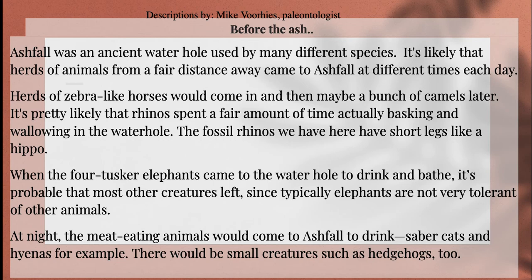I'm just going to read through these. You can read with me, or you can mute me and read it yourself. Ashfall was an ancient waterhole used by many different species. It's likely that herds of animals from a fair distance away came to Ashfall at different times each day. Herds of zebra-like horses would come in, and then maybe a bunch of camels later. It's pretty likely that rhinos spent a fair amount of time basking and wallowing in the waterhole. The fossil rhinos we have here have short legs like a hippo. When the four-tusker elephants came to the waterhole to drink and bathe, it's probable that most other creatures left, since typically elephants are not very tolerant of other animals.